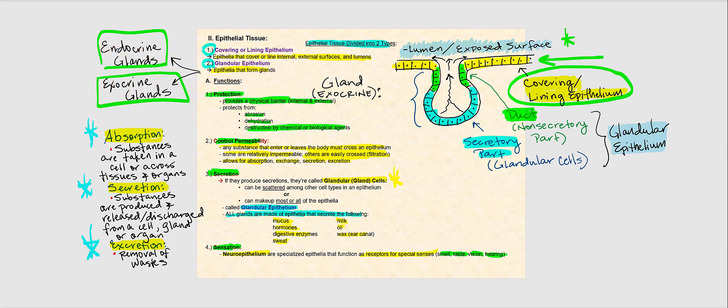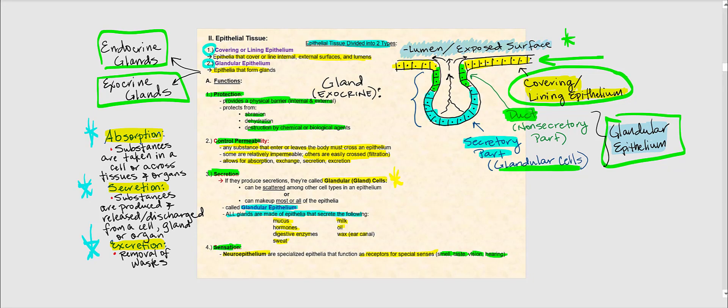The epithelial cells responsible for producing those secretions are called glandular cells — at the end of the day, they are epithelial cells. The duct is the non-secretory part, while the secretory part produces the products. Taken together, this is glandular epithelium. The secretory part of the exocrine gland discharges its products onto the exposed surface, and the duct channels those secretions to that surface.